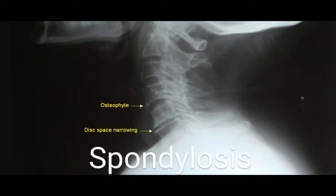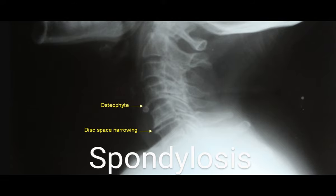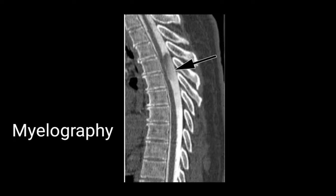The next image shows spondylosis with disc space narrowing in the vertebrae. The disc space is more at some levels but narrowed at others, and there are osteophytes at the corners of the vertebrae — these are known as degenerative changes in the spine.